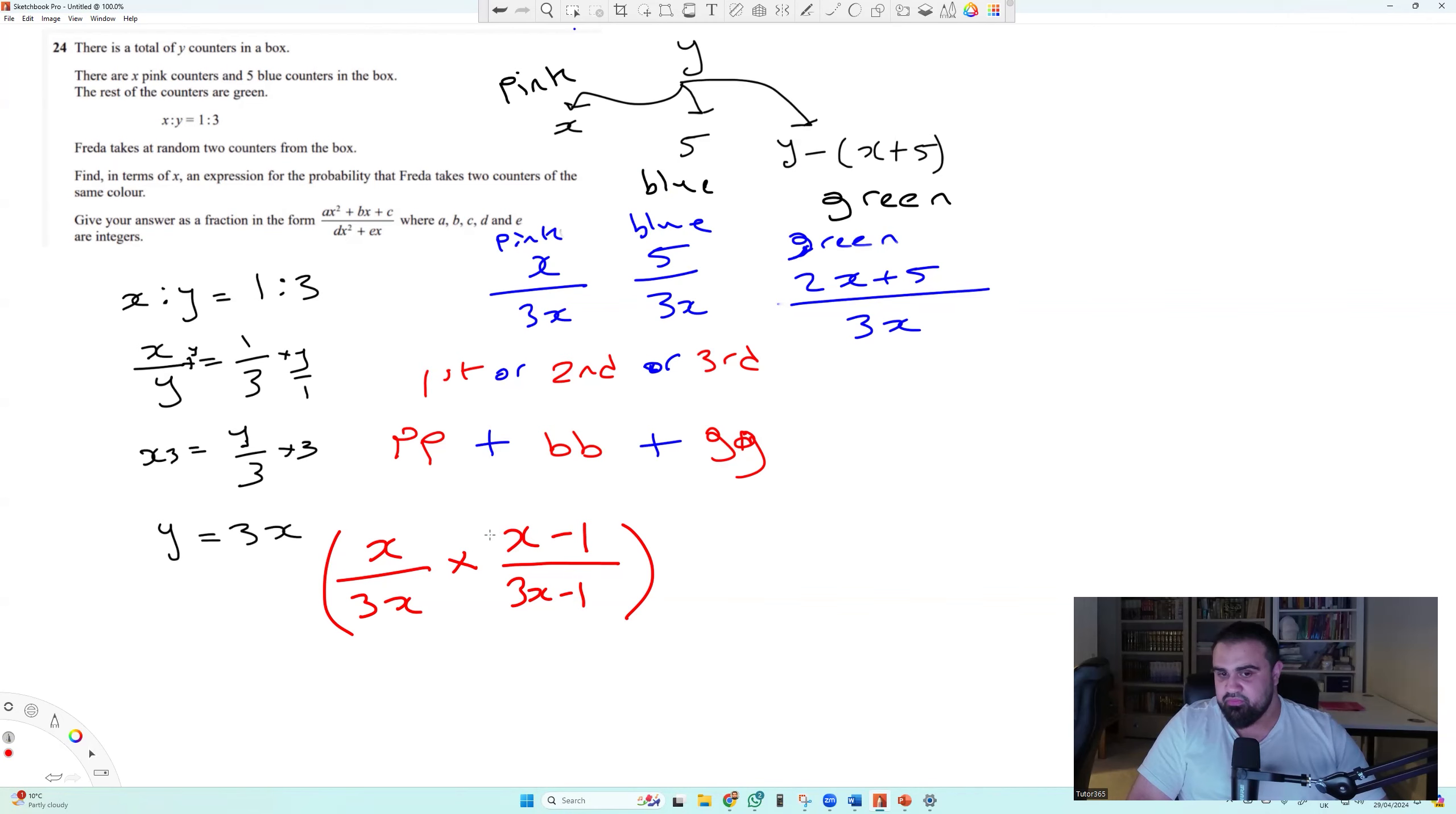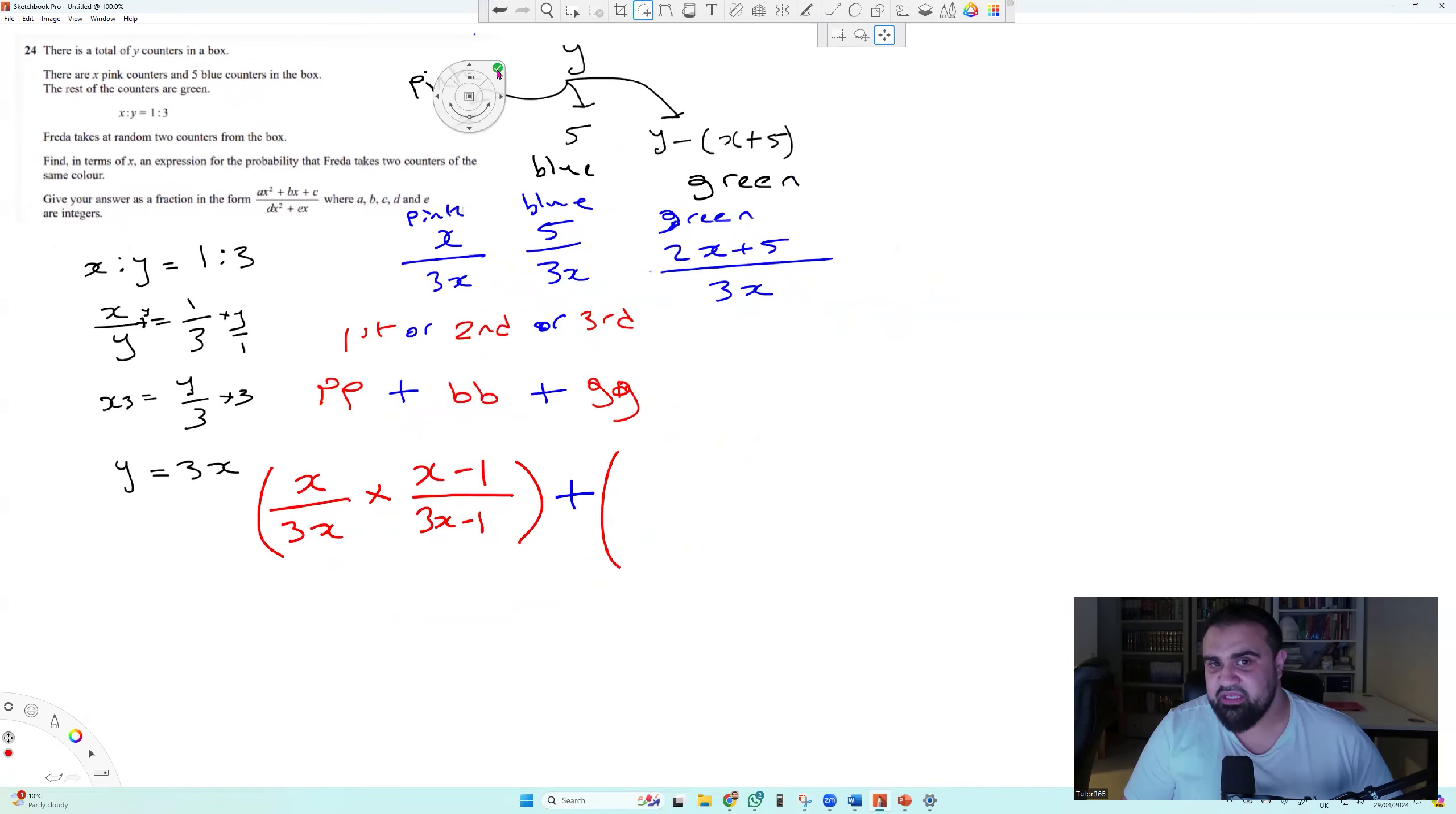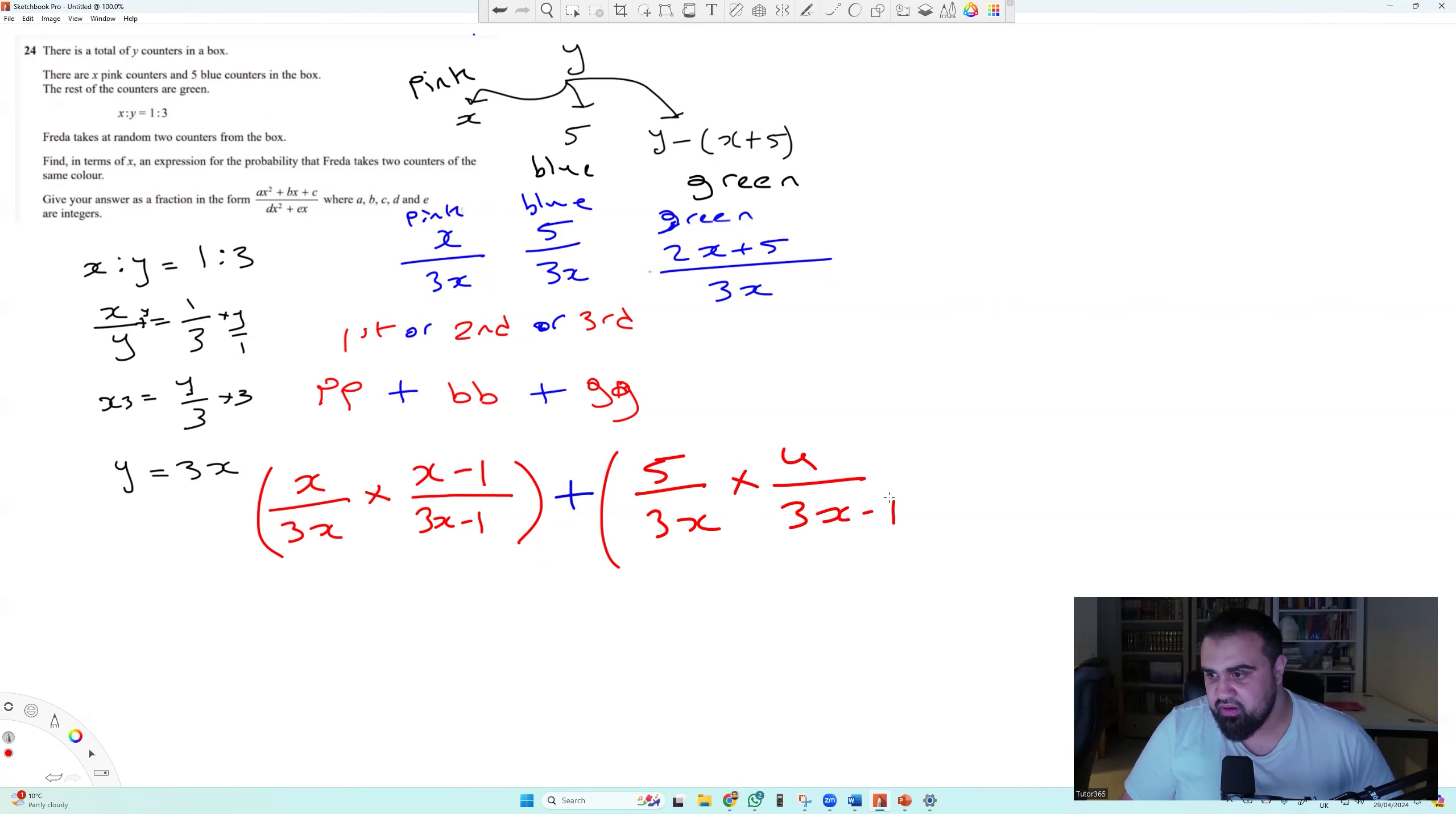So now, what's the probability that we can get two pinks? The probability will be X over 3X, and that'll be times, so in brackets, X minus 1 over 3X minus 1. So this is basically a tree diagram now. X over 3X, so she can get a pink, and then we multiply that by the probability to get a pink a second time. And how many pinks are there now? Well, there's one less. The total is 3X minus 1.